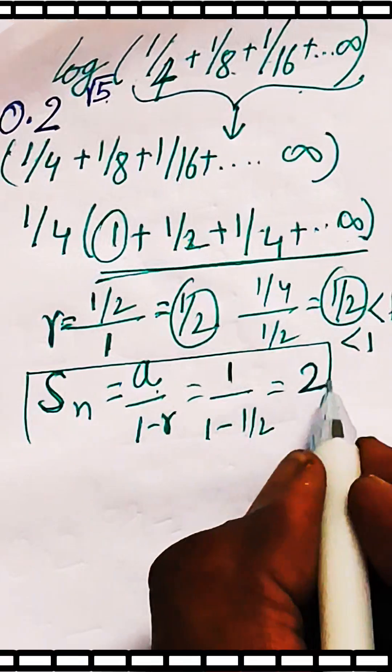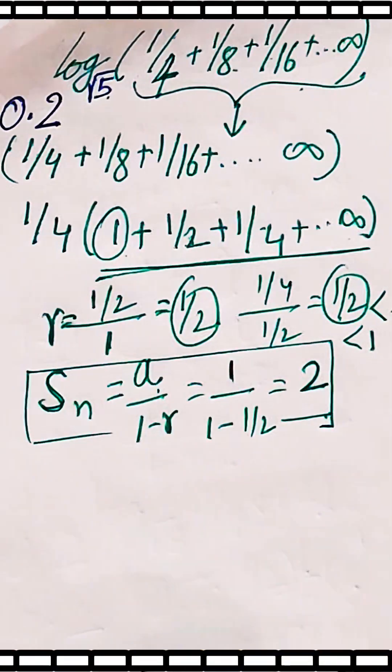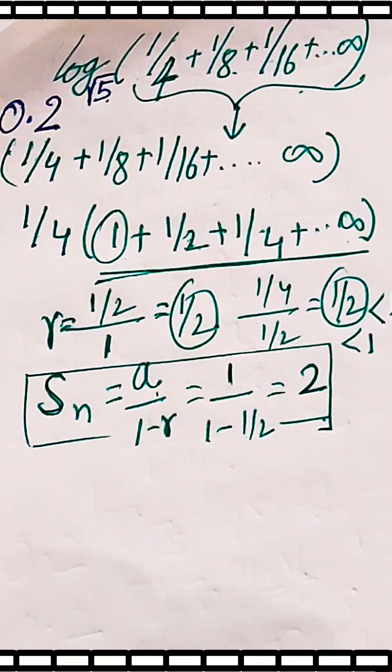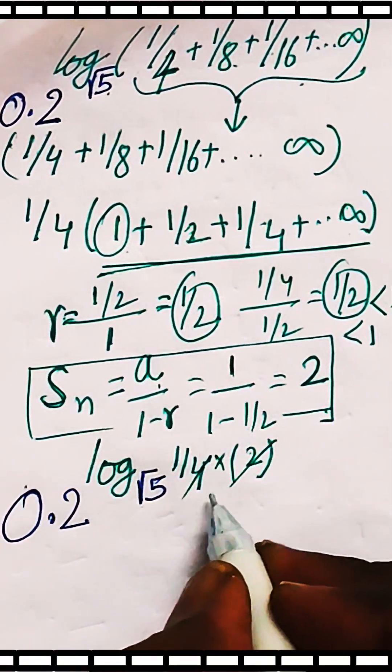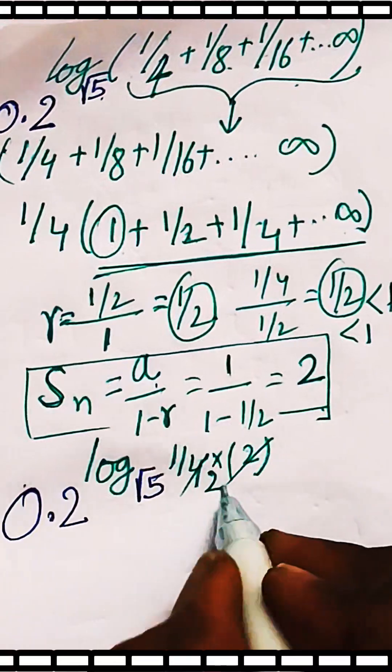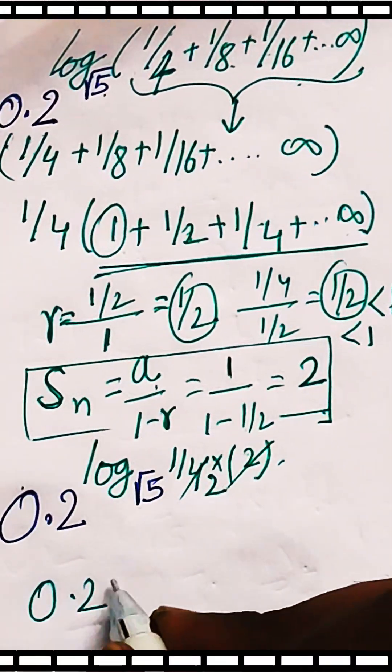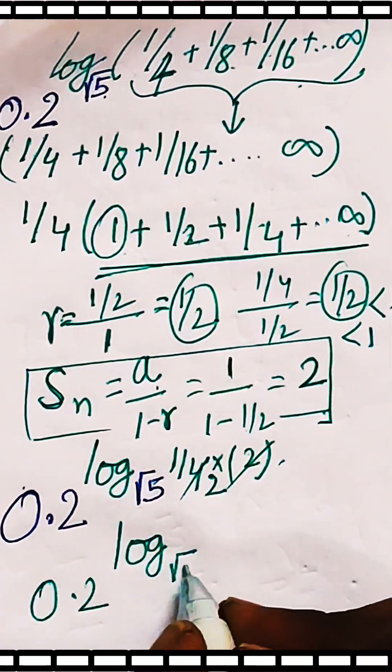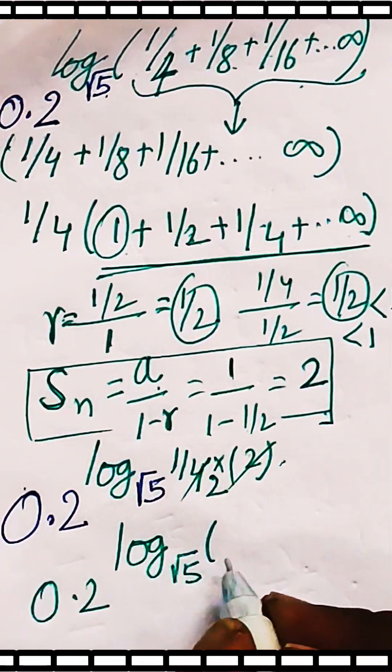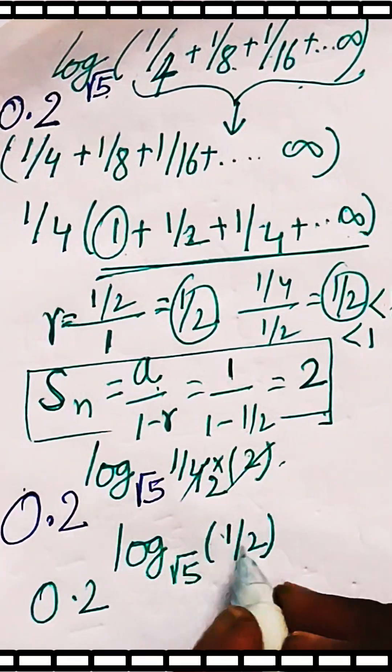Now 1/4 needs to be multiplied, so we have this simplified expression. This will divide 4 into 2 times, and we will have 0.2 raised to the exponent log base root 5 of 1/2.